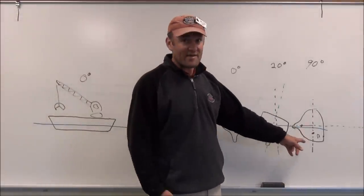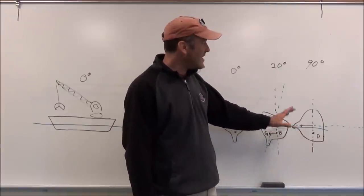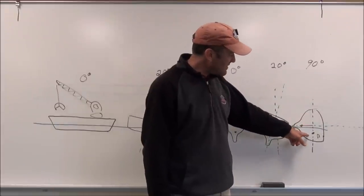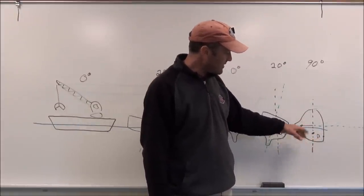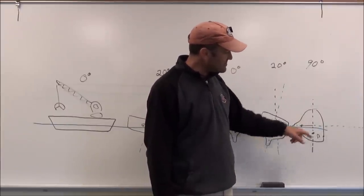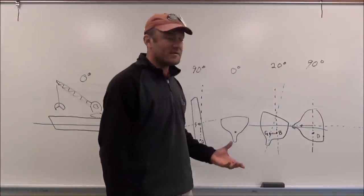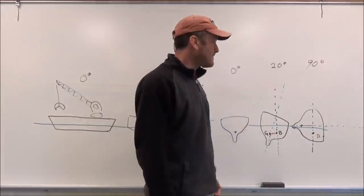However, our sailing vessel over here, a round bottom full displacement sailing vessel, goes to 90 degrees, the center of buoyancy is shifted way over because it's a fairly deep hull, and thus it provides a very large righting arm, or at least a large enough righting arm to help bring her back up.